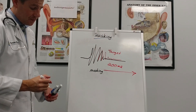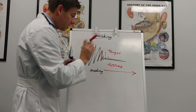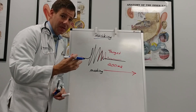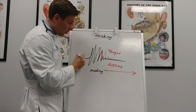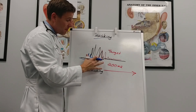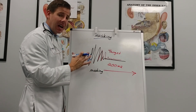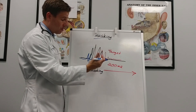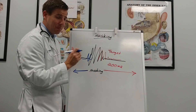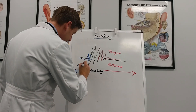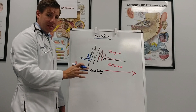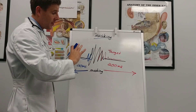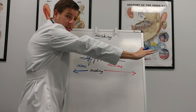Forward masking can actually take place up to 200 milliseconds. Something more astonishing is backwards masking — this sound can actually mask out something that takes place right before it. Say a noise was heard right before this; you might have never recognized it because the transient sound masks it out. This is called backwards masking, and it can take place up to about 20 milliseconds.